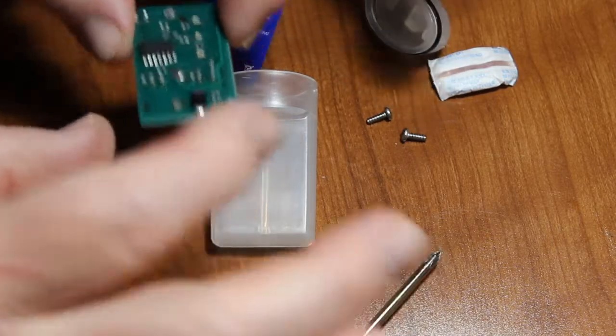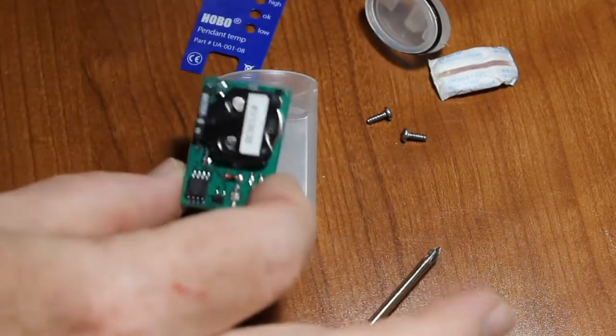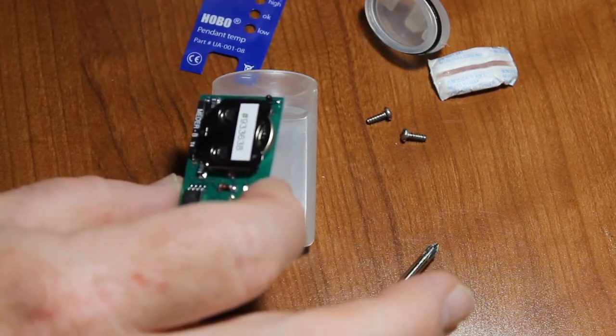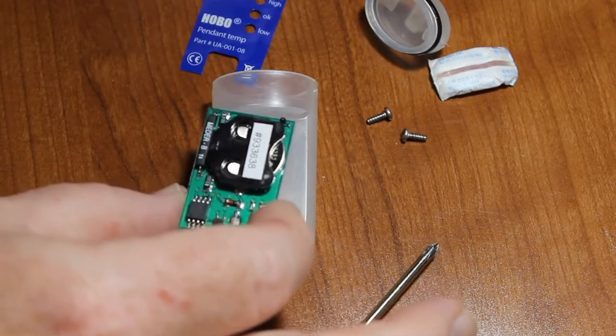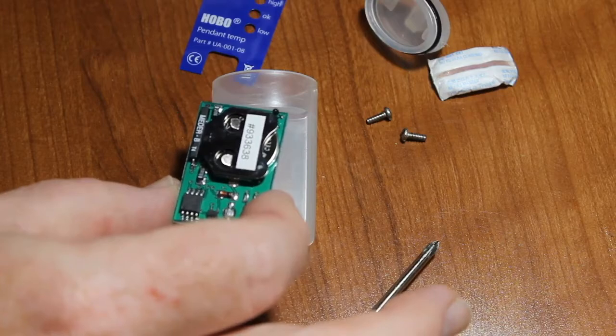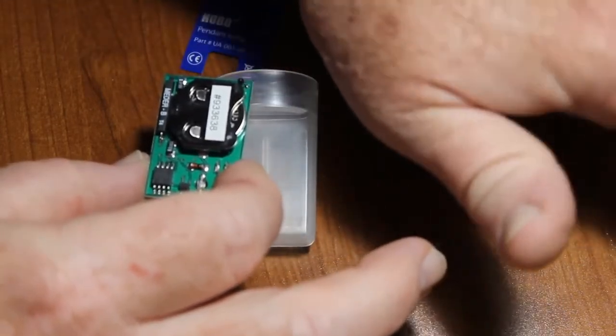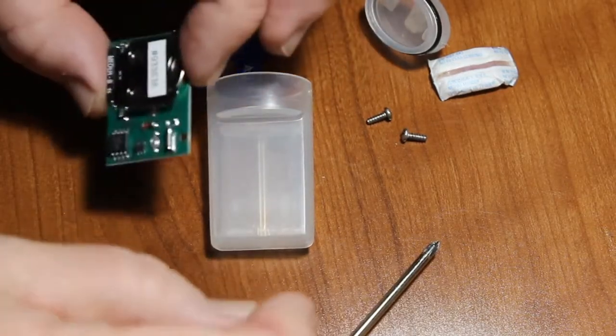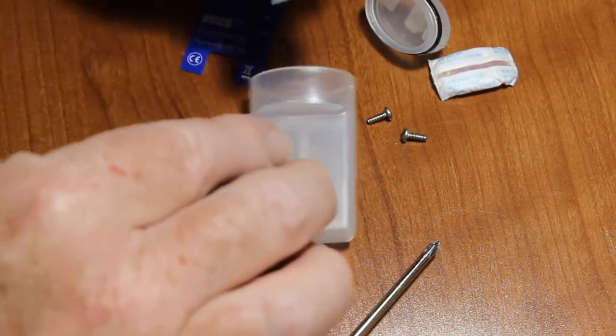Make sure to hold this by the edges. These are static sensitive so you want to be very careful if you are in a very dry environment. You want to mitigate any kind of static discharge. You may want to touch your fingers to metal before you start handling this just to make sure you get rid of any static discharge that's on your fingers.